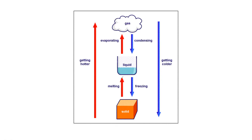If we have a solid and supply heat energy it turns into a liquid; supply more heat energy and it turns into a gas. Liquid turning into gas can be boiling or evaporation — evaporation occurs at the surface at any temperature range, while boiling occurs at a specific temperature. Gas turns to liquid via condensation; liquid turns to solid via freezing. When something gets hotter its internal energy increases, and when something gets colder its internal energy decreases.